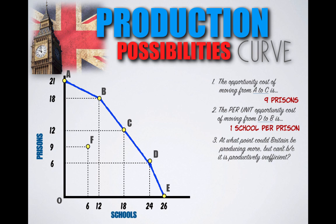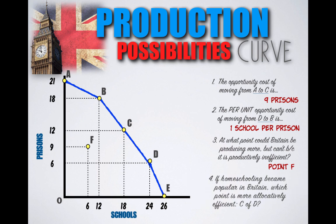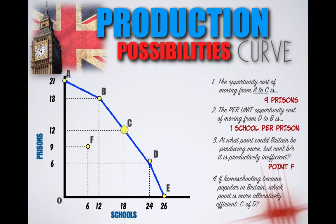Productive inefficiency in Great Britain is represented by a point inside the curve, Point F. If homeschooling became popular in Britain, which point is more allocatively efficient — C or D? Allocative efficiency refers to producing what society needs and wants most. Since social values have shifted away from public schooling, we're looking for the combination with fewer schools being built. The more allocatively efficient point in this scenario is Point C.